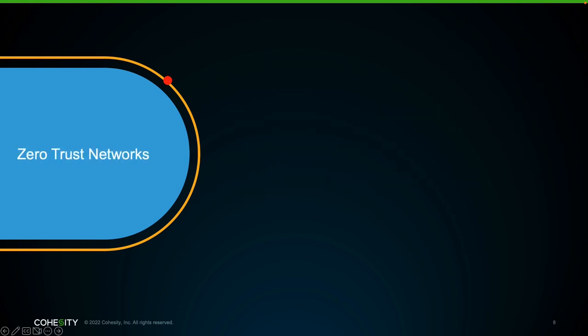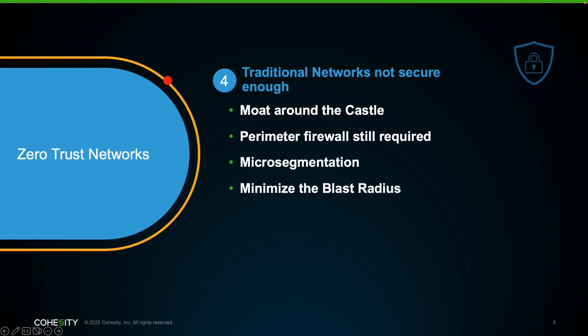Zero trust networks. The old paradigm is no longer viable given today's cyber threat landscape. Think of the moat around the castle as your perimeter firewall, and the castle as your corporate IT environment — having a hard outer shell but a soft inside leaves your IT environment vulnerable to today's more sophisticated attacks. The traditional network perimeter is still required but is only step one. A zero trust network is micro-segmented: the practice of breaking up security perimeters into small zones to maintain separate access for separate parts of the network, providing more granular security and dynamic adaptation. This makes it easier to block lateral movement of threats and contain a potential breach. Coupling micro-segmentation with least privilege access drastically reduces the blast radius of a breach or malicious code like ransomware.